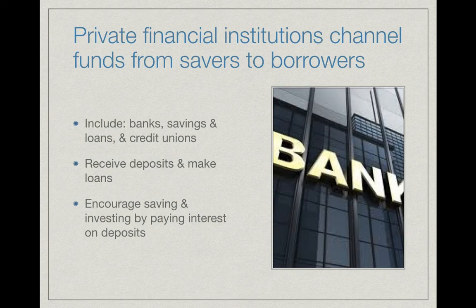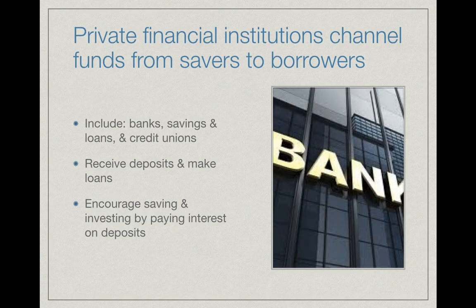Private financial institutions channel funds from savers to borrowers. For example, a bank will use your savings and lend it out to borrowers, who then pay interest on the amount borrowed — meaning they pay above what they originally borrowed. Some of this money goes back to the saver, but this is also how banks make their money. Private financial institutions include banks, savings and loans, and credit unions.